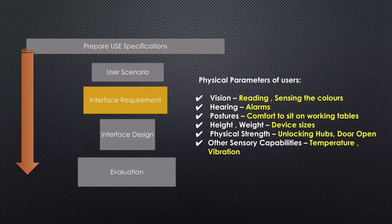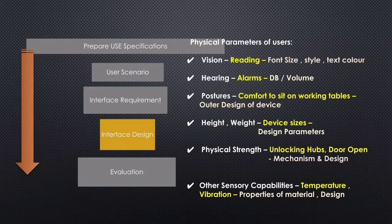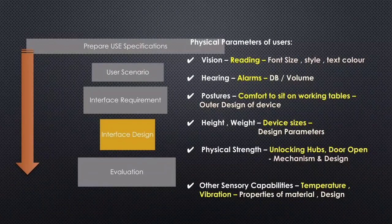Interface requirements: we have to consider the user's scenarios while designing the product and while selecting the materials of the product, we have to consider those scenarios and fulfill them in our product — this is called the interface requirement. In interface design, we have to explain how we fulfill the user's scenarios and interface requirements in the product. For example, if I design a chair, I have to consider the weight of the user, the height of the user, and where they will use the chair — in the office or at home — to meet the requirement.